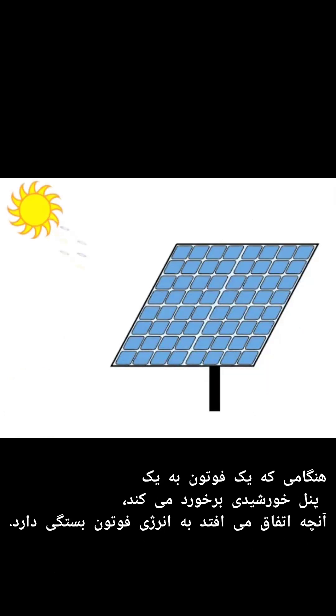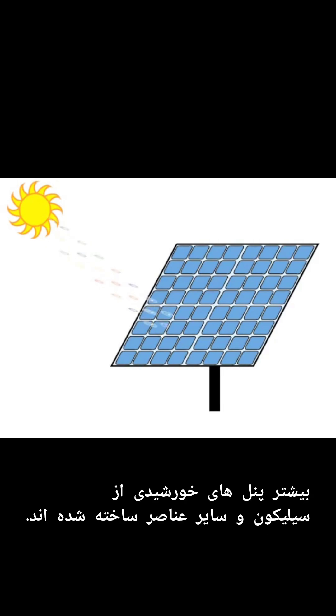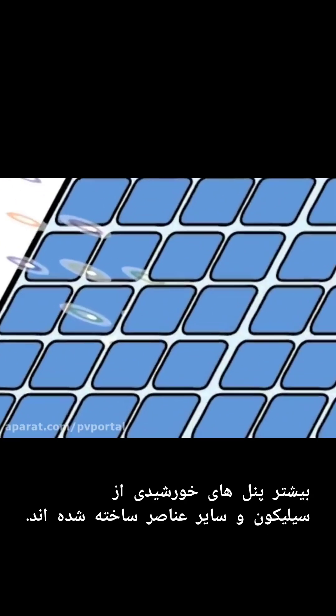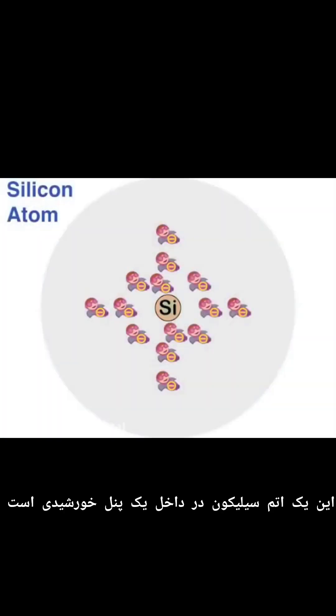When a photon hits a solar panel, what happens depends on the energy of the photon. Most solar panels are made of silicon and other elements. This is a silicon atom inside a solar panel.